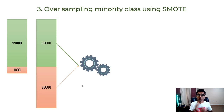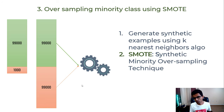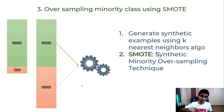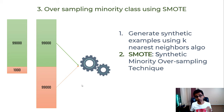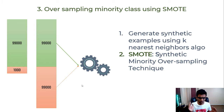The third option is oversampling using a technique called SMOTE — Synthetic Minority Oversampling Technique. Here you use the k-nearest neighbors algorithm to produce synthetic samples from your minority class samples. In Python, there is a module called imbalanced-learn (imb-learn) which can be used for SMOTE.